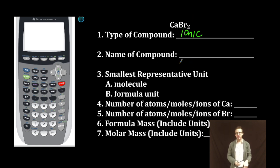As we throw back to ionic nomenclature, remember we just name our cation calcium and our anion bromide.